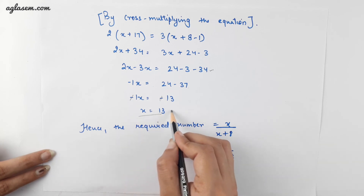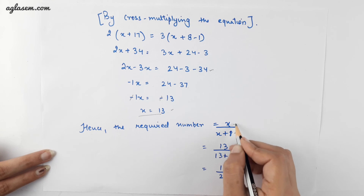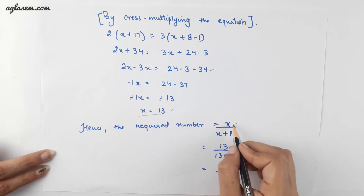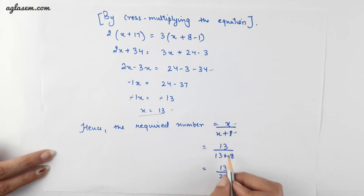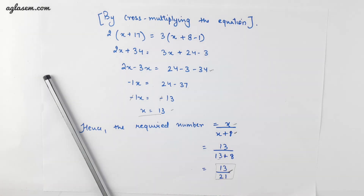Now that we have found x, we have to find the rational number. The initial rational number was x upon (x plus 8). Putting the value of x, we get 13 upon (13 plus 8). So the final rational number is 13 by 21. With this we have covered the last exercise of chapter 2, that is 2.6. In case of any doubt, please feel free to comment in the comment section below. Till then, take care, bye bye, thank you.